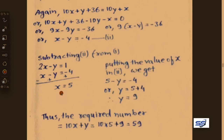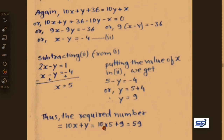We get x equals 5 and y equals 9. The required two-digit number is 10x plus y equals 10 into 5 plus 9 equals 50 plus 9 equals 59. So our required number is 59.